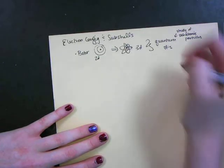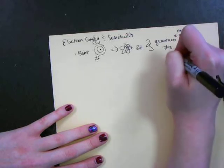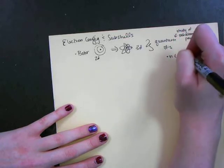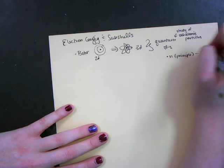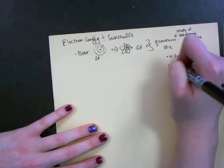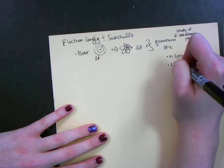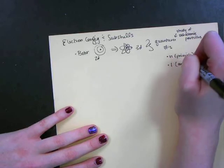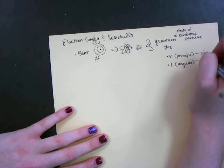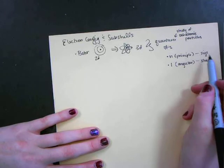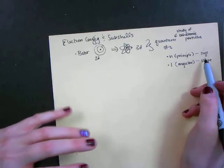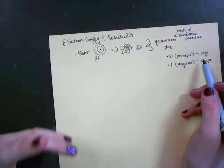The quantum numbers you should recognize: n as your principal quantum number talks about the size, l is the angular quantum number and that's going to discuss the shape. This is what we look at in terms of the orbital, so where your electrons are actually being, what area of the atom they reside in.